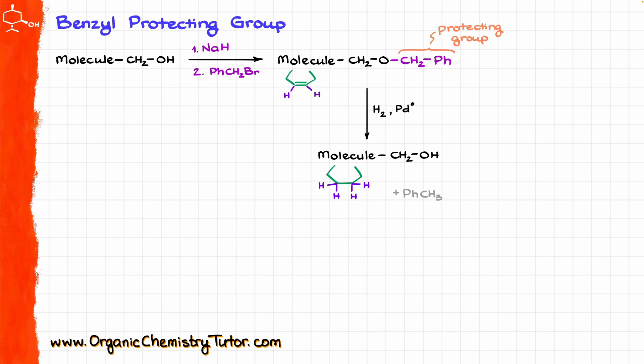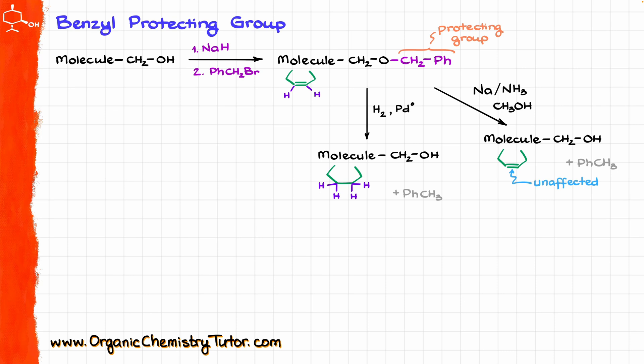Well, that is where our reaction — the Birch reduction — actually comes in handy. Because now, instead of doing hydrogen on palladium, if you take that benzyl protecting group with the Birch reduction conditions, then the double bond is going to be unaffected and you are effectively going to be reducing your protecting group and removing it from your molecule.